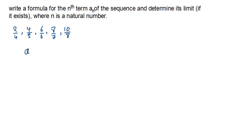So, we have to determine what our an is — that's our nth term. When you are dealing with fractions, it's very advisable to look at the numerator and look at the denominator separately, to see what is happening to each, and that makes things much easier. So when I look at the numerator: this is our first term, this is our second term, third term, fourth term, and our fifth term right here.